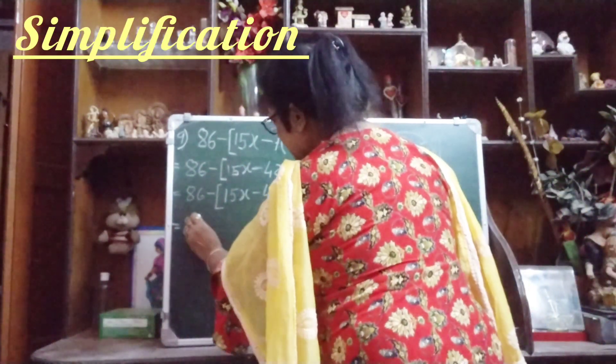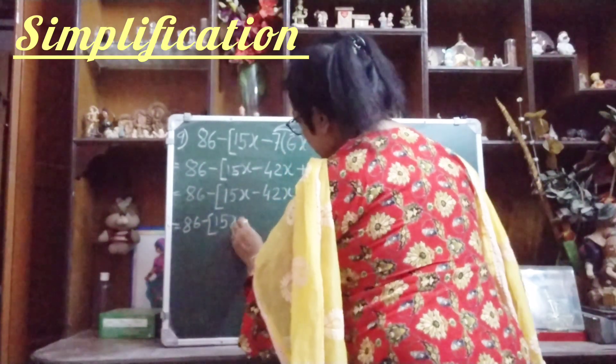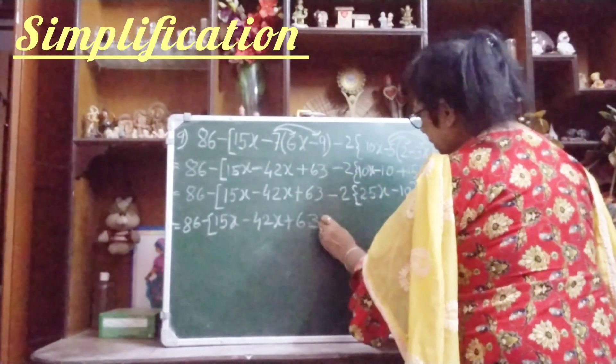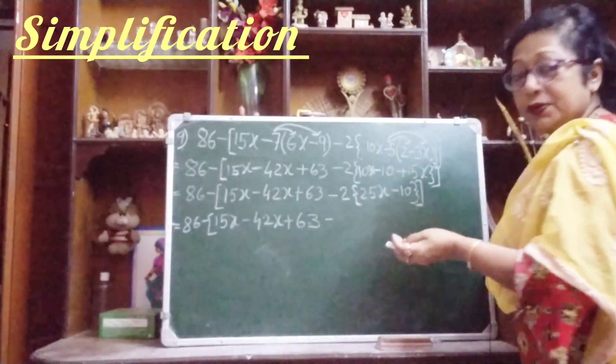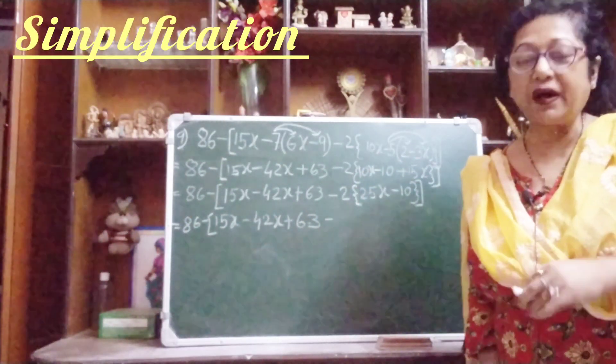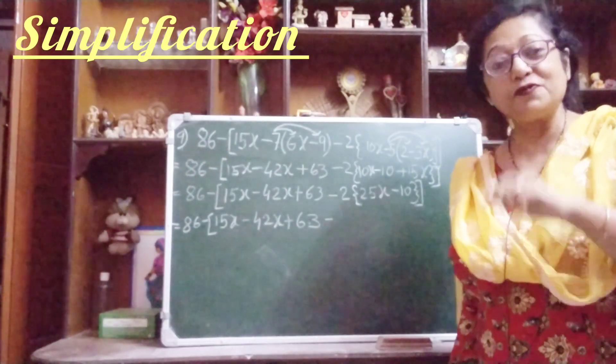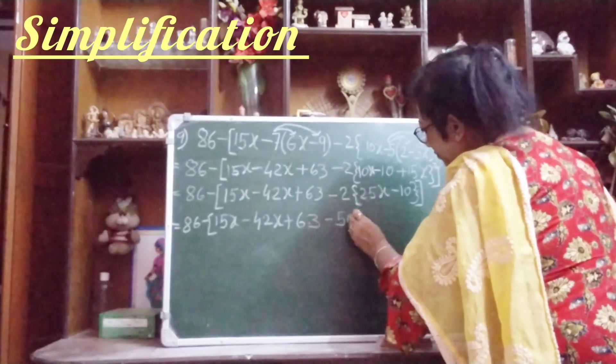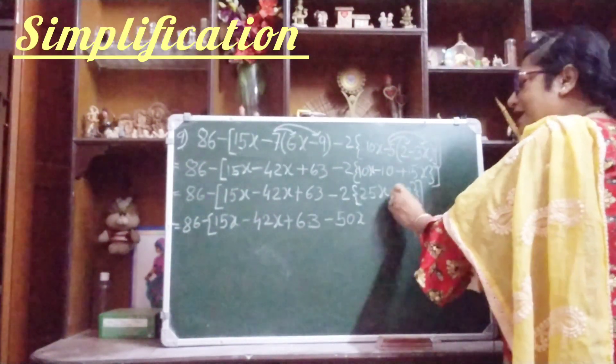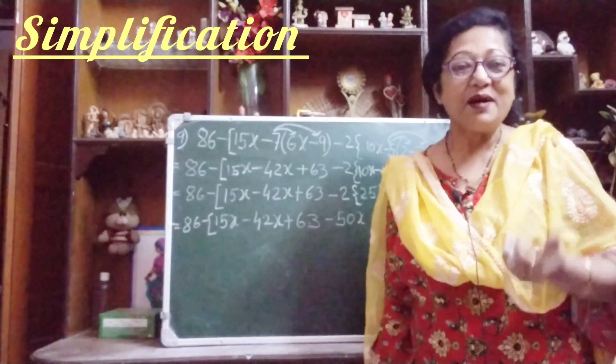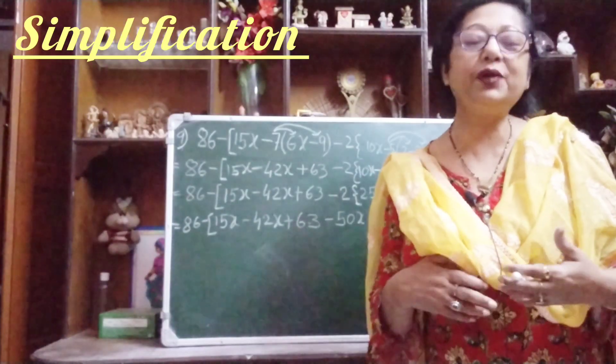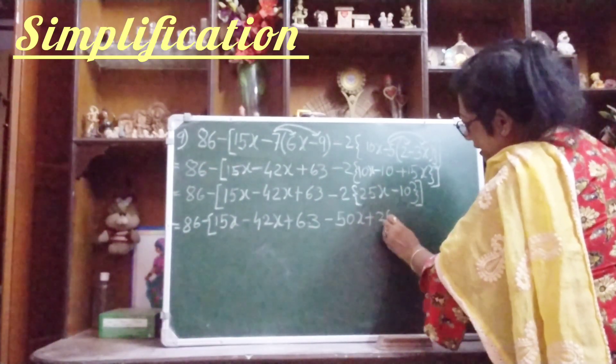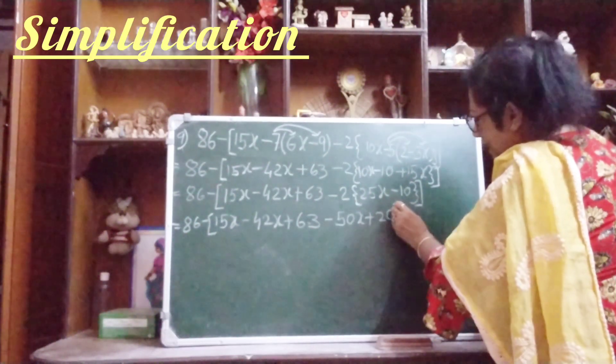Next step, 86 minus 15x minus 42x plus 63 minus. Now before this curly bracket, minus 2 is here, so minus 2 into 25, what it will be? Minus 50x. 25 into 2 is 50, and minus sign is there, so minus 50x. Now minus 2 and minus 10, these two numbers we will multiply. So 10 times 2 is 20, and minus minus plus. Third bracket close.